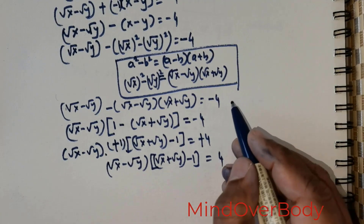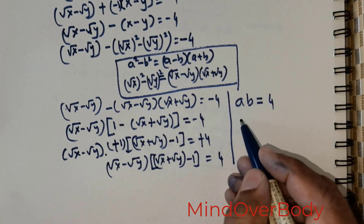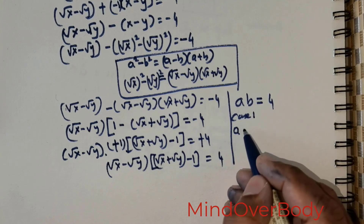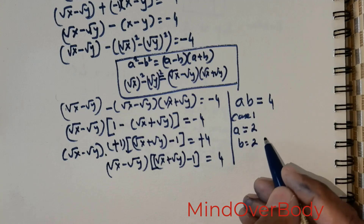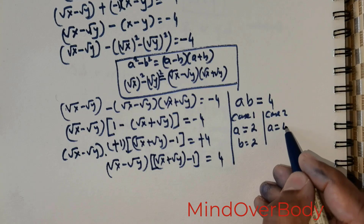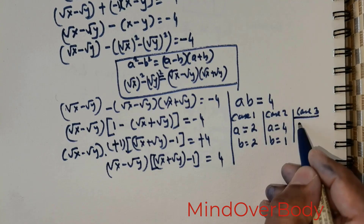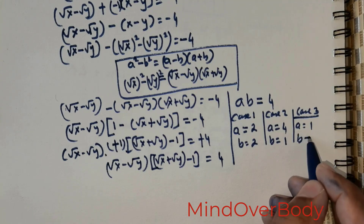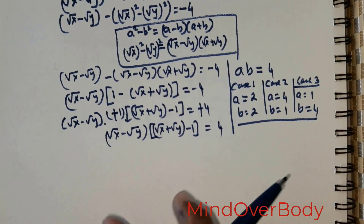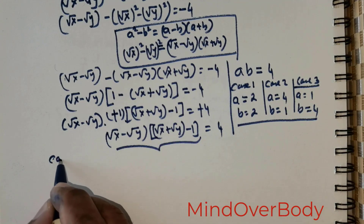Now this is similar to a multiplied by b equals 4. The probable cases are: Case 1 — a equals 2 and b equals 2. Case 2 — a equals 4 and b equals 1. Case 3 — a equals 1 and b equals 4. So these are the three cases. So Case 1: root of x minus root of y equals 2, and root of x plus root of y minus 1 equals 2. Case 2: root of x minus root of y equals 4, and root of x plus root of y minus 1 equals 1. Case 3: root of x minus root of y equals 1, and root of x plus root of y minus 1 equals 4.